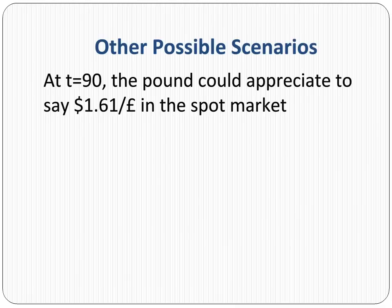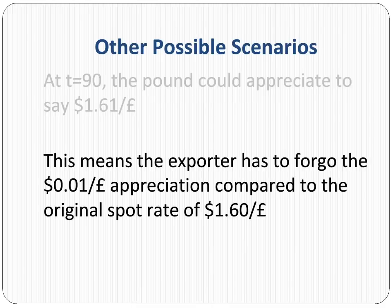Let's consider other possible scenarios. Contrary to the exporter's fears, the pound could actually appreciate in the spot market in 90 days to $1.61 per pound. This means the exporter has to forego the appreciation of 1 cent per pound compared to the original spot rate of $1.60. This is the nature of a forward contract.